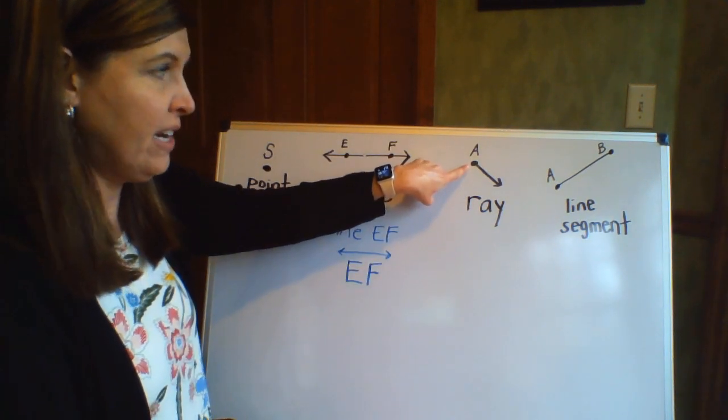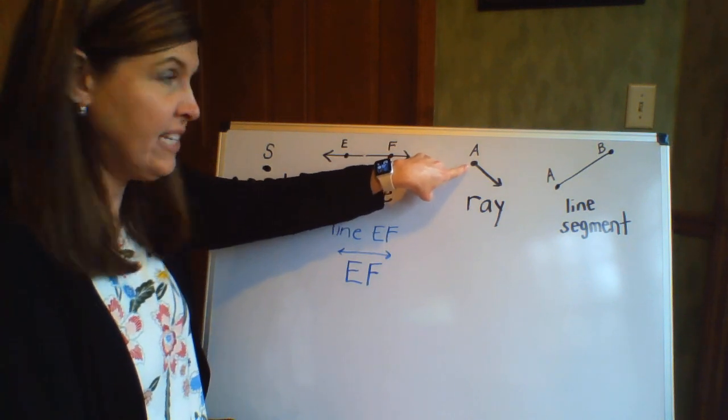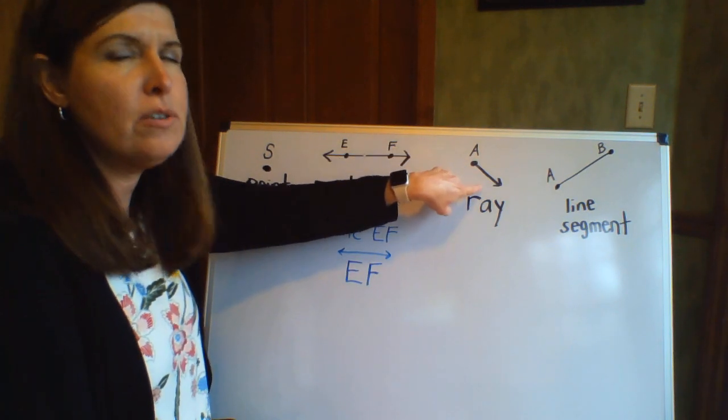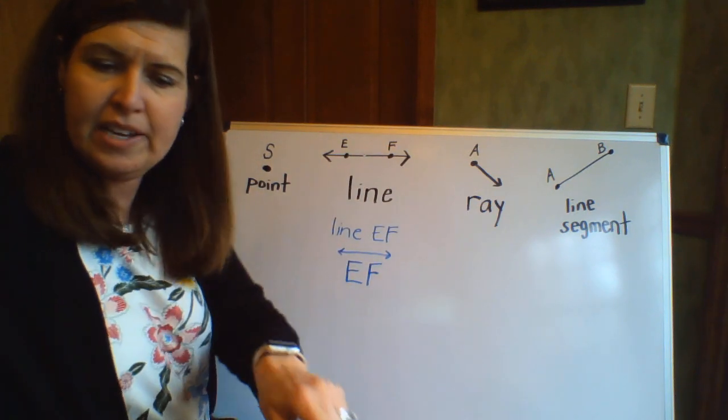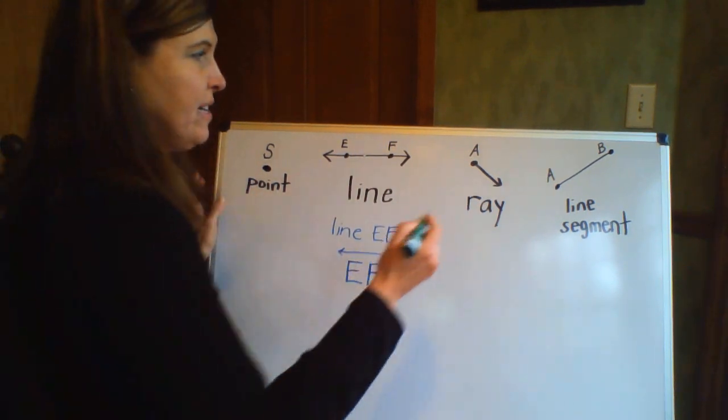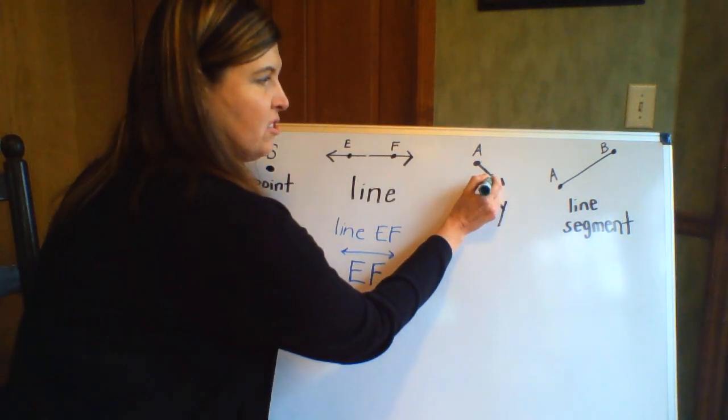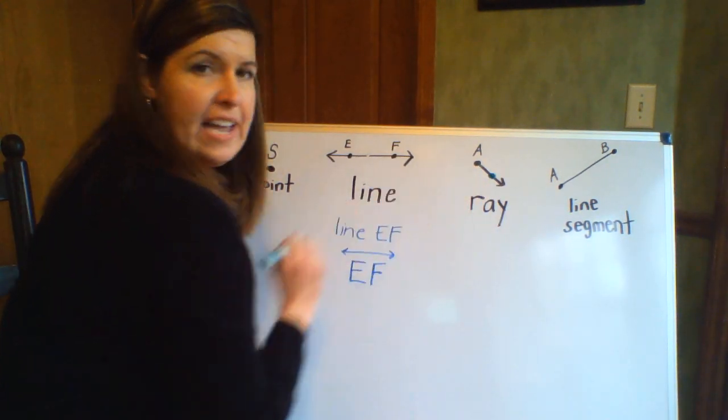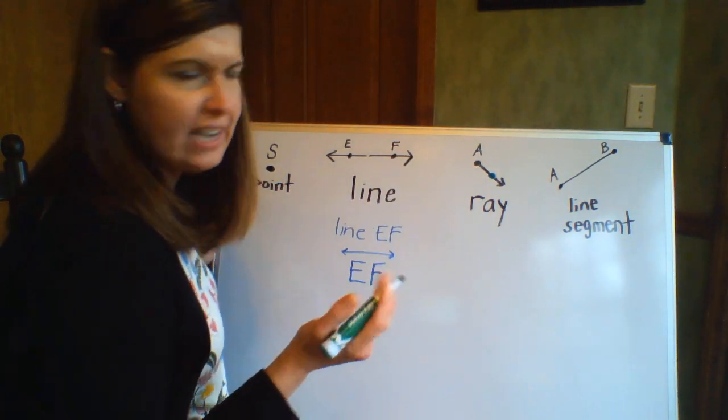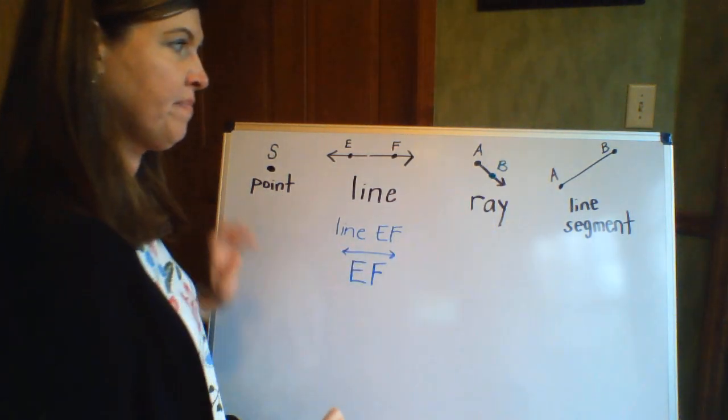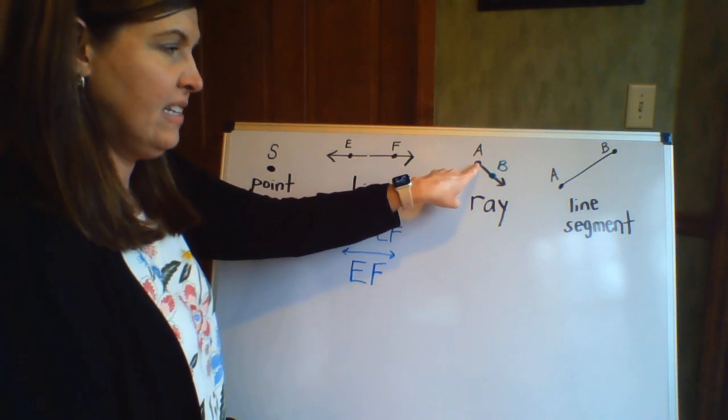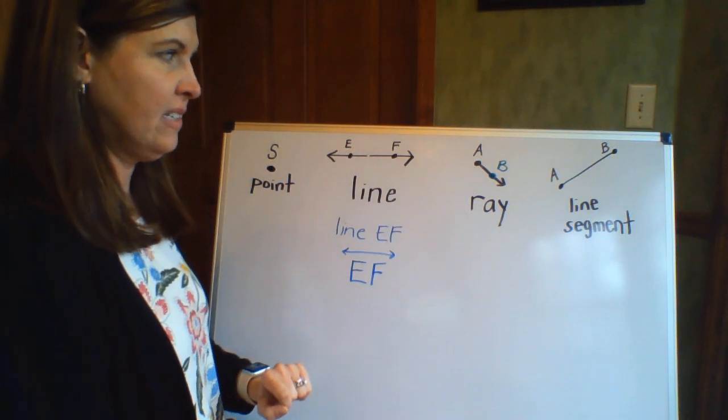Now a ray has an endpoint, and a lot of times the endpoint is going to have a letter to it. It can also have other points on it if you want it to. So that's what I'm going to do. I'm going to say this is a ray and it has a point here, the endpoint A, and I'm just going to give it another point. I'm going to say it has B. So endpoint and a line to it.